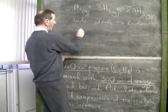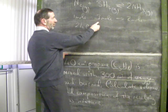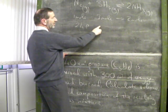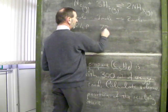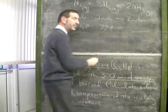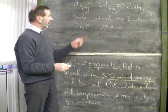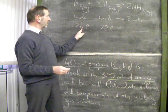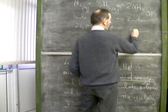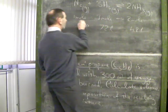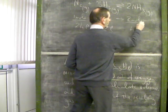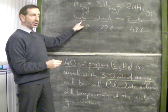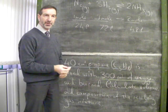So, 24 litres of nitrogen would react with three moles of hydrogen — that would be three times 24, which is 72 litres of hydrogen. And that in turn would produce two moles of ammonia, which would be twice 24, which is 48 litres. You can see the ratio one to three to two still holds true, but now we're dealing with gas volumes.